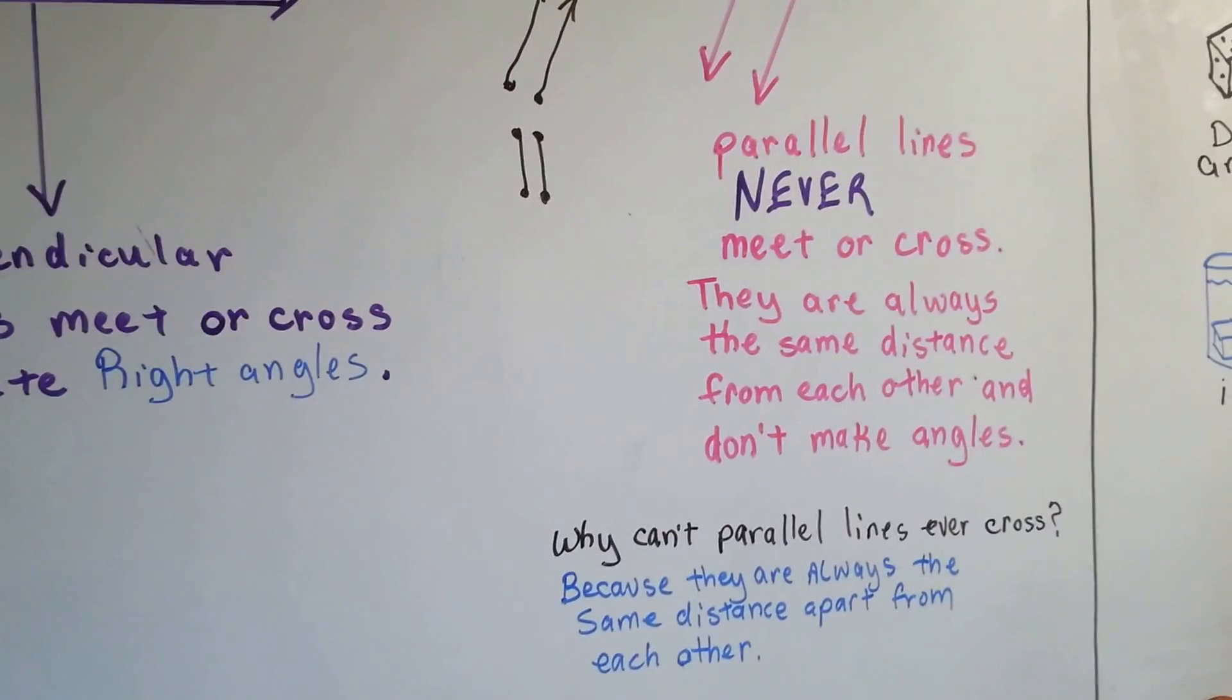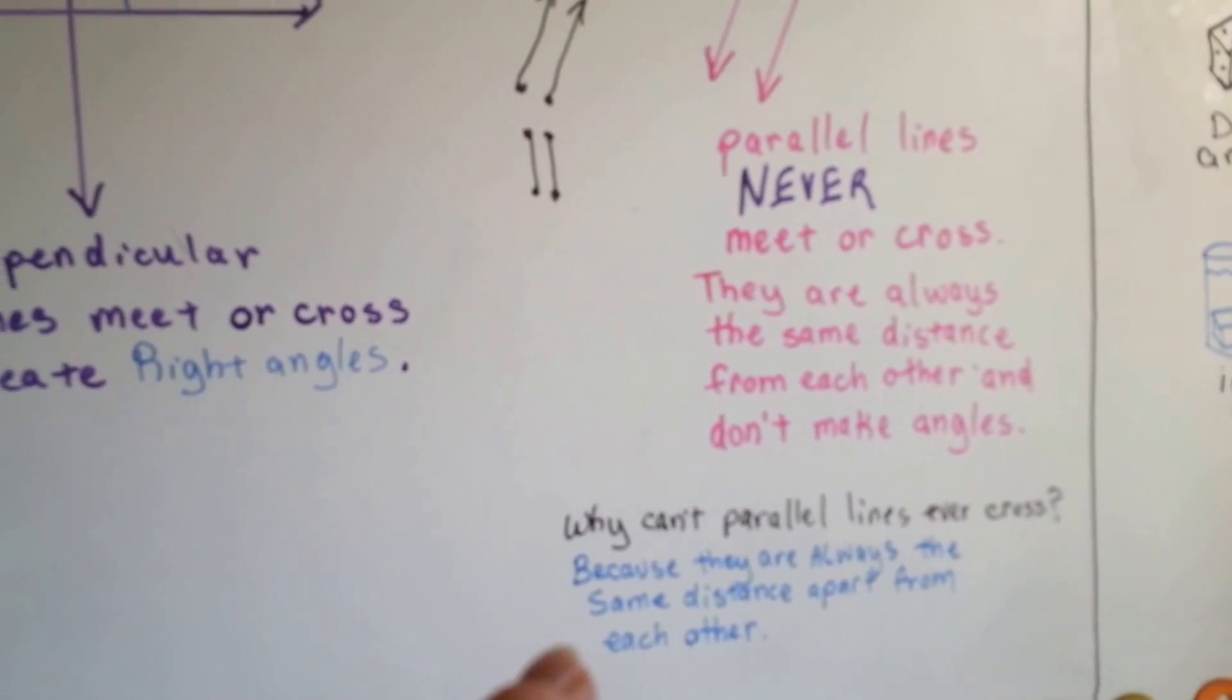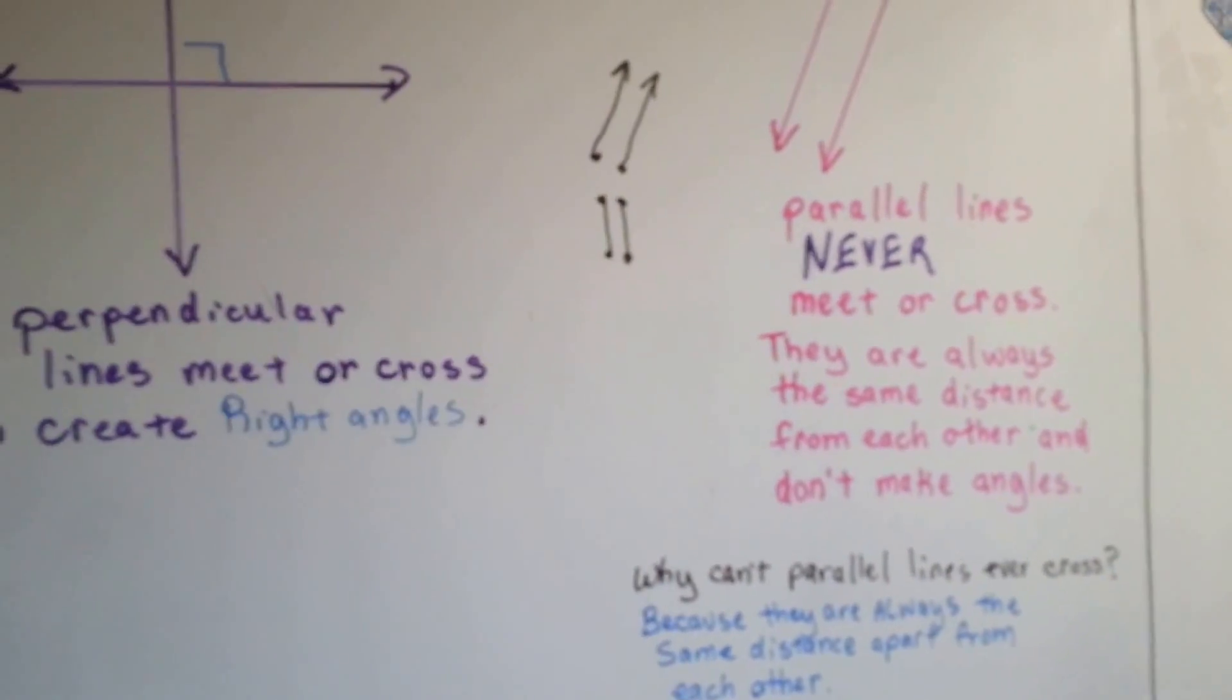So why can't parallel lines ever cross? Because they always are the same distance apart from each other at all times.